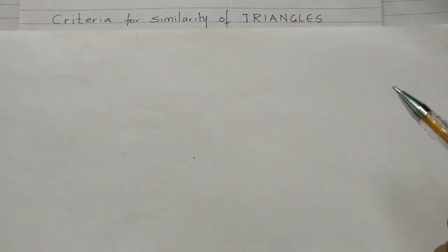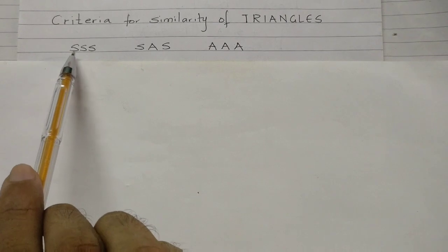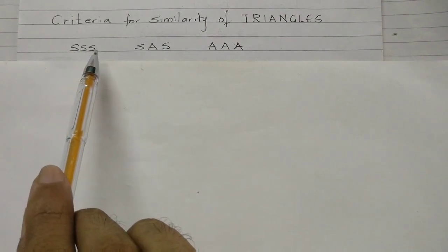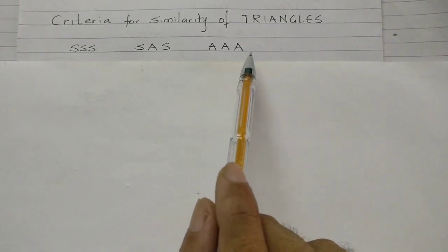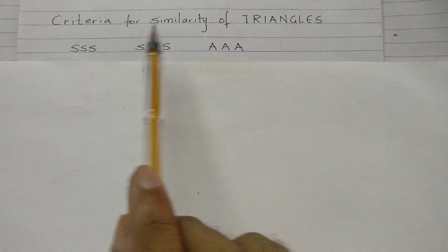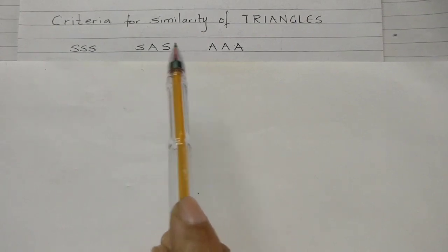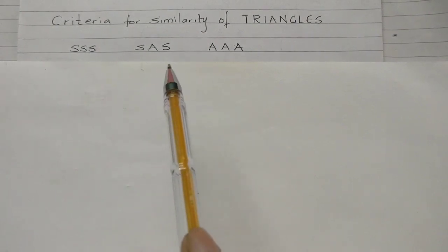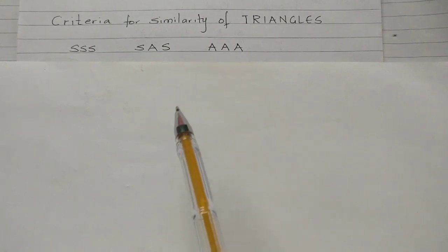So let's straight away learn them. First thing: criteria of similar triangles. Before you start learning how to write down the ratios, you should know the criteria for similar triangles. We have already discussed these — Side-Side-Side similarity test, SAS similarity test, and AAA similarity test. If you have not seen that video, I'll put the link in the description box. Go ahead and watch it, because based on that you'll be able to understand this part.